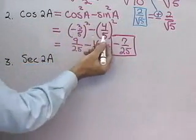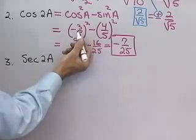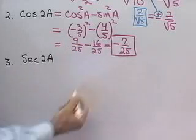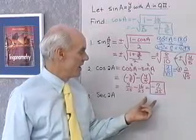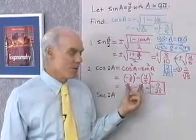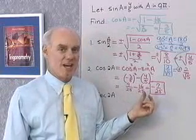Cosine squared A minus sine squared A, substitute in the values I have from problem number 1, get negative 7 25ths. So, that's not too bad, pretty easy. I think the double-angle formulas are a little easier than the half-angle formulas.